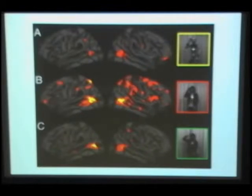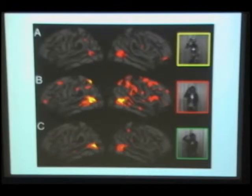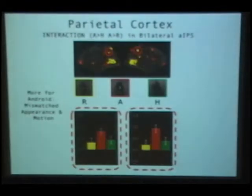Without even knowing too much about the anatomy or the brain, you can see pretty clearly that the human and robot responses look a lot more like each other than the android response does. All these additional regions are getting interested and activated by the android. It's most significant in the parietal lobe, which is the node connecting that network — the central part of the network — and it's bilateral, which is reassuring.